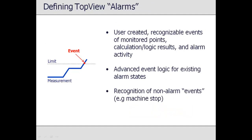Although we use the term alarm, Top View alarms are just events of the monitored values that the user would like to recognize. This can be simple value alarms, such as temperature is greater than 50, or can include additional logic for existing alarm states, such as a high-high alarm that has existed for five minutes. Top View can also recognize and notify for events such as a unit started, maintenance mode has been entered, or a new sample has been taken.